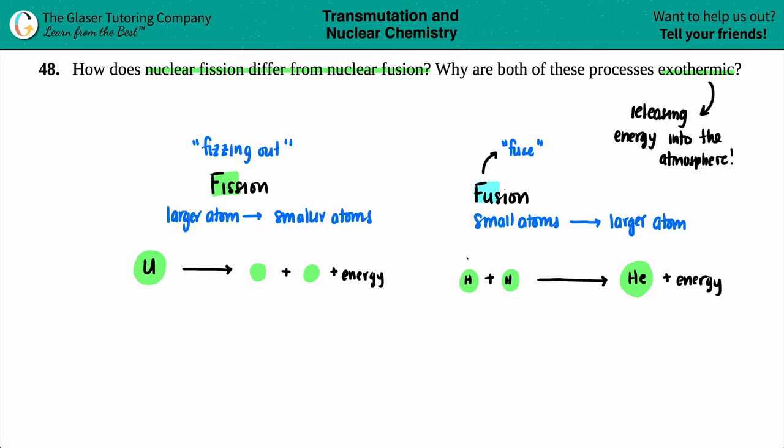Chances are that whatever mass you had on the reactant side isn't going to add up exactly to the mass of the atoms on the right side. For fusion, the total mass on the left side does not equate to the total mass on the product side. It turns out that for both of these, your products are always going to be less mass than what you started with. The mass of the helium is less than the addition of the hydrogens.